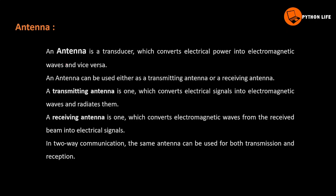An antenna is a transducer. A transducer is an electronic device. It converts electrical power into electromagnetic waves and vice versa. An antenna can be used as a transmitting antenna or a receiving antenna.